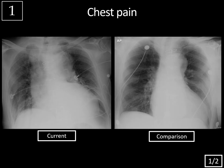We're looking at two AP portable chest x-rays and compared to the prior study, you can see there's been significant widening of the mediastinum. You get some normal widening of the mediastinum on a portable chest x-ray, especially at low lung volumes, but comparing these two studies, this is a pretty dramatic increase. Generally, you can use a rough measurement of greater than 8 centimeters on transverse dimension as a definition for a widened mediastinum.